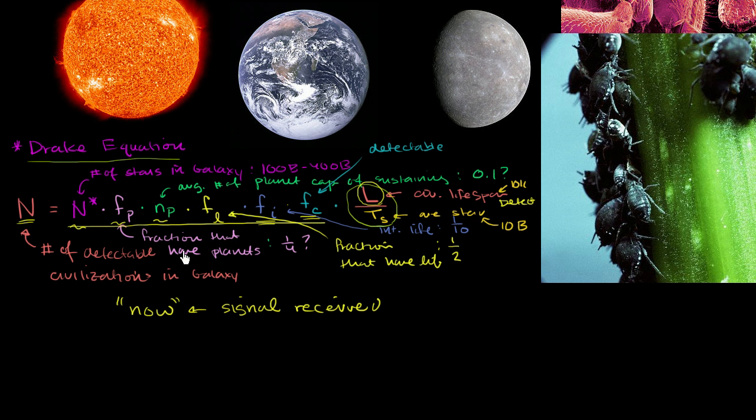We don't care about the ones that came and went and their radio signature went past us while we were still living in caves or we were hunter-gatherers. We care about the ones that their radio signatures are receiving us now. And that's why we have this little term right over here. This is the length of the detectable civilization divided by the life of that planet or that solar system or that star.